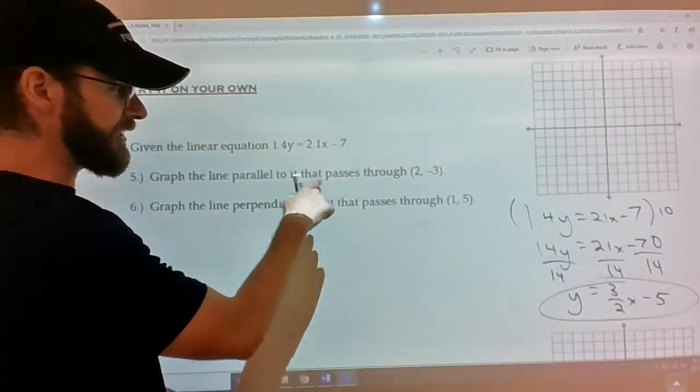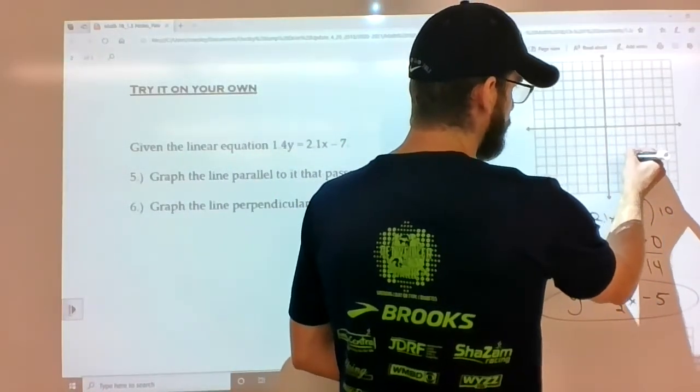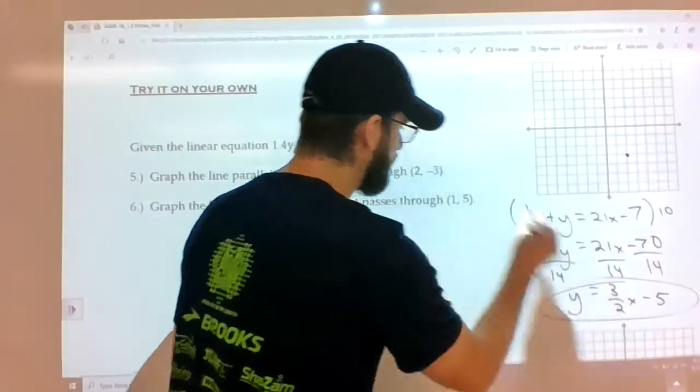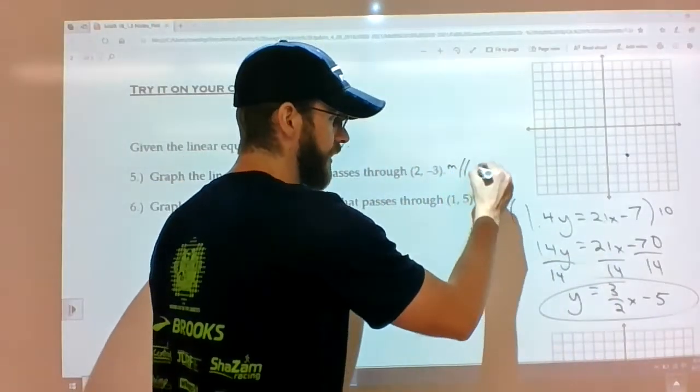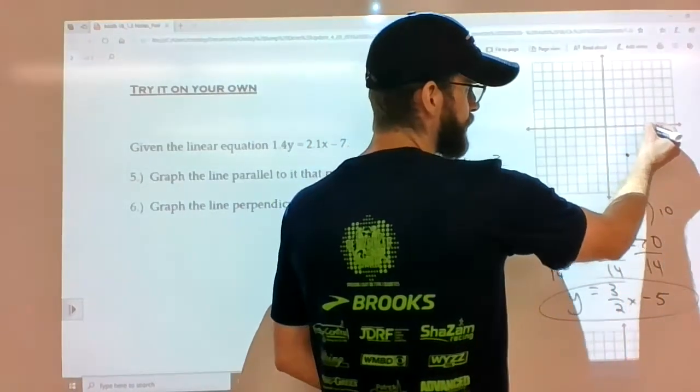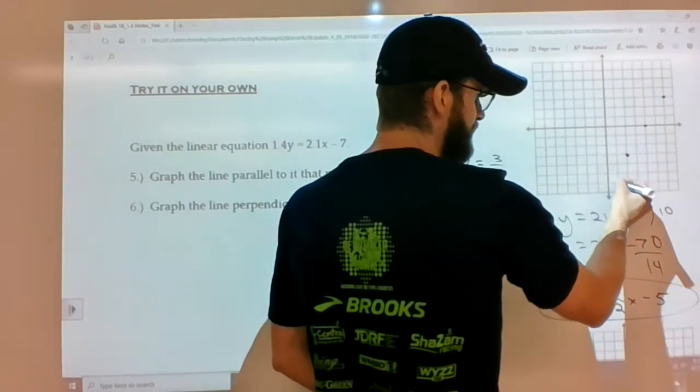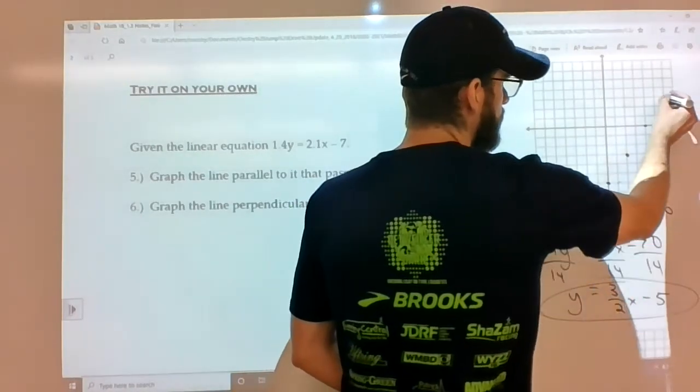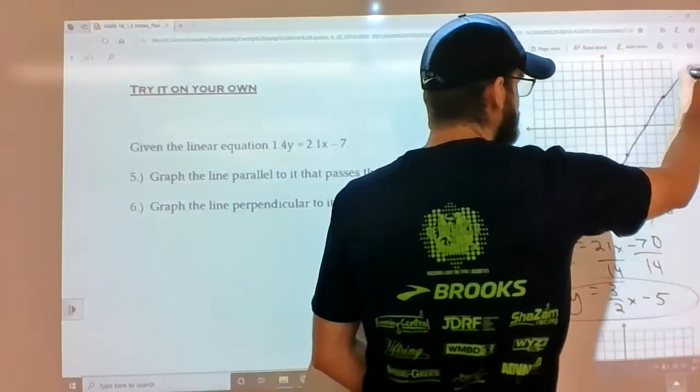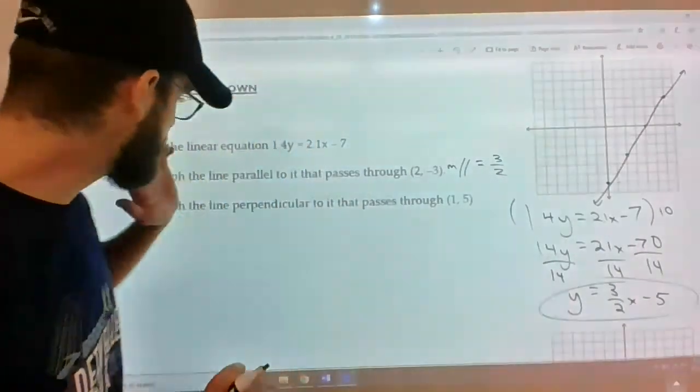Graph the line parallel to it that passes through (2, -3). Alright. That'd be 1, 2, down 3. It's parallel to it, which means if m is 3/2, m parallel would equal 3/2 as well. So you'd go up 3, right 2, up 3, right 2, down 3, left 2. Sorry, I don't use the ruler because it takes too much video time.